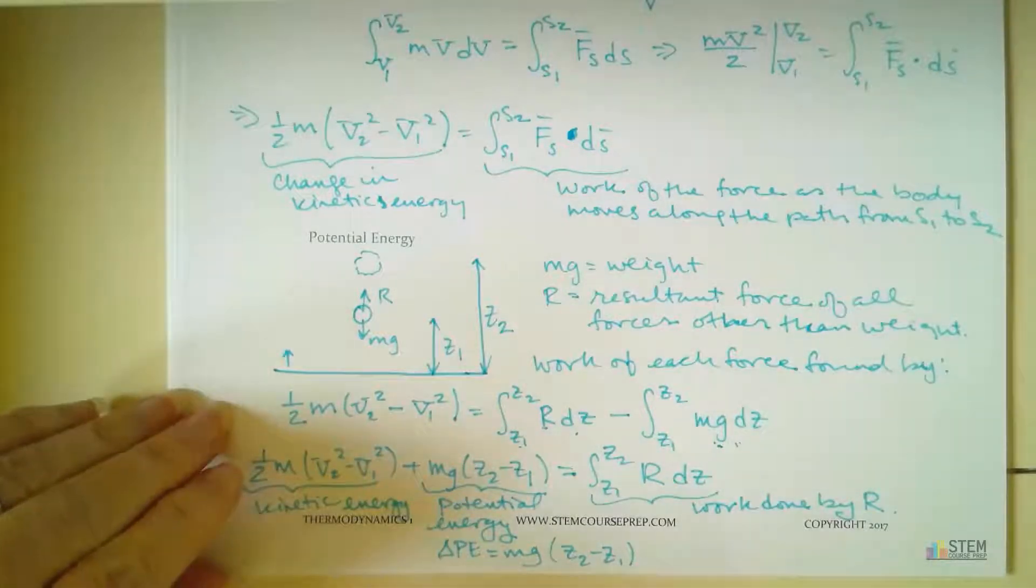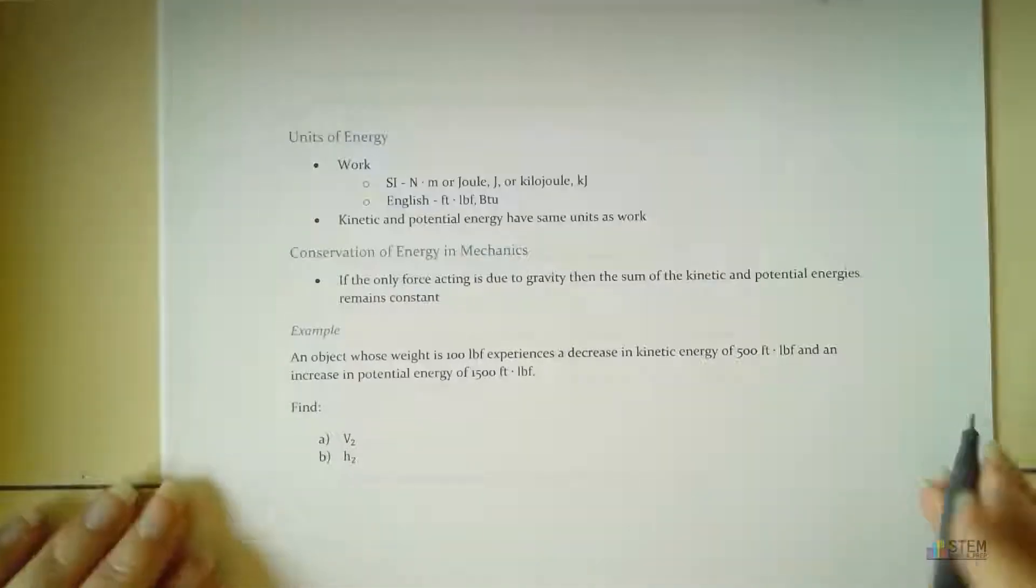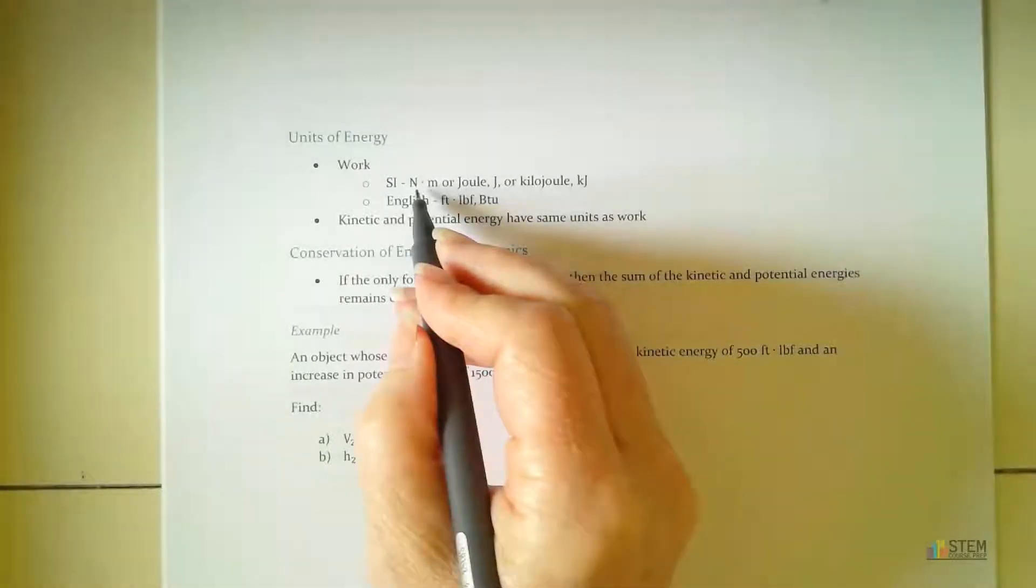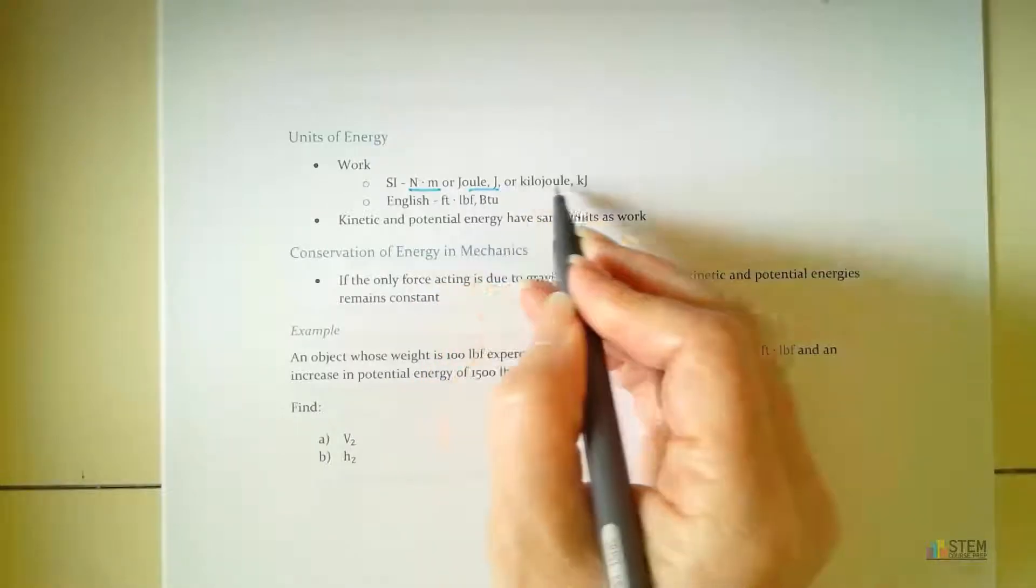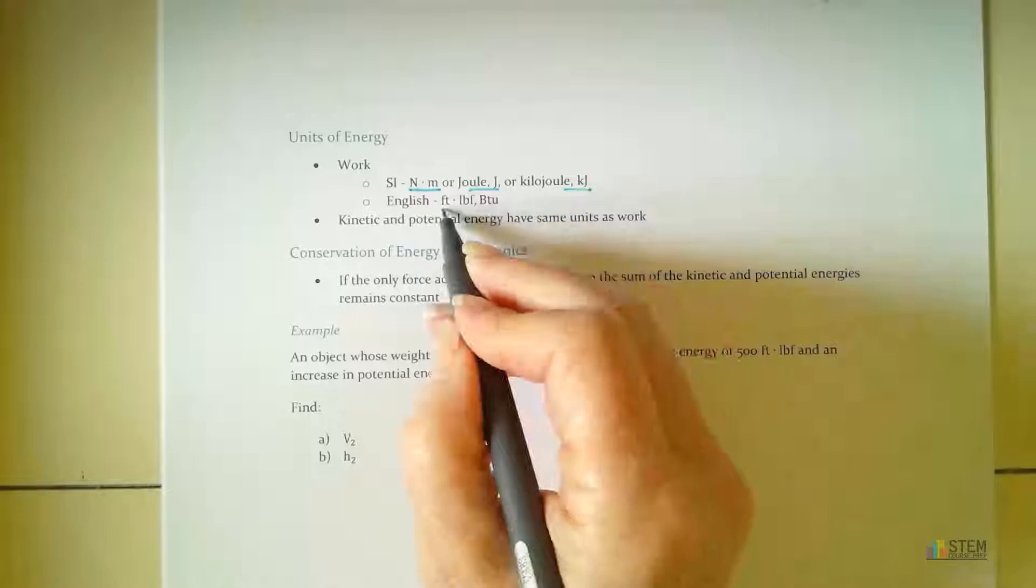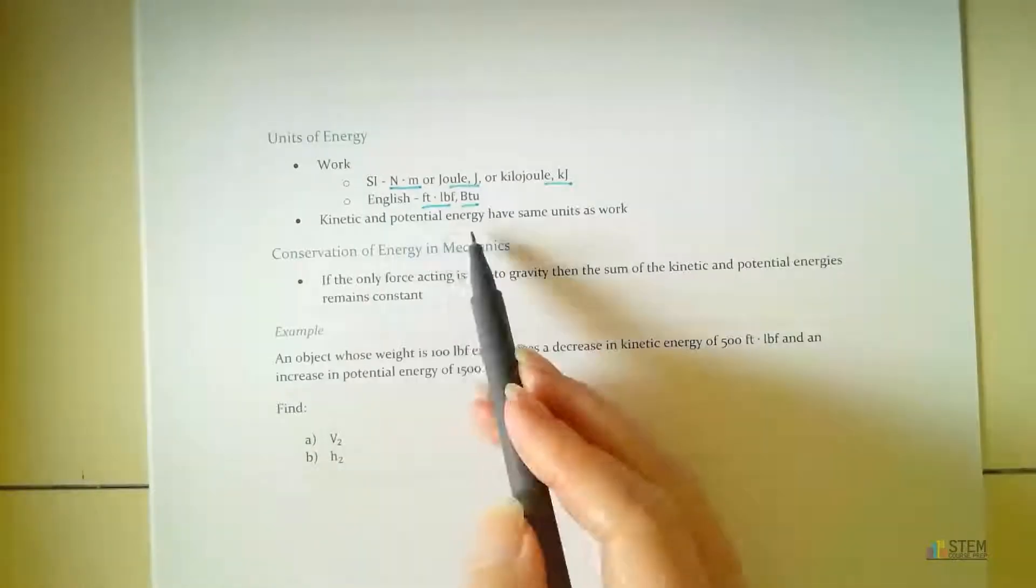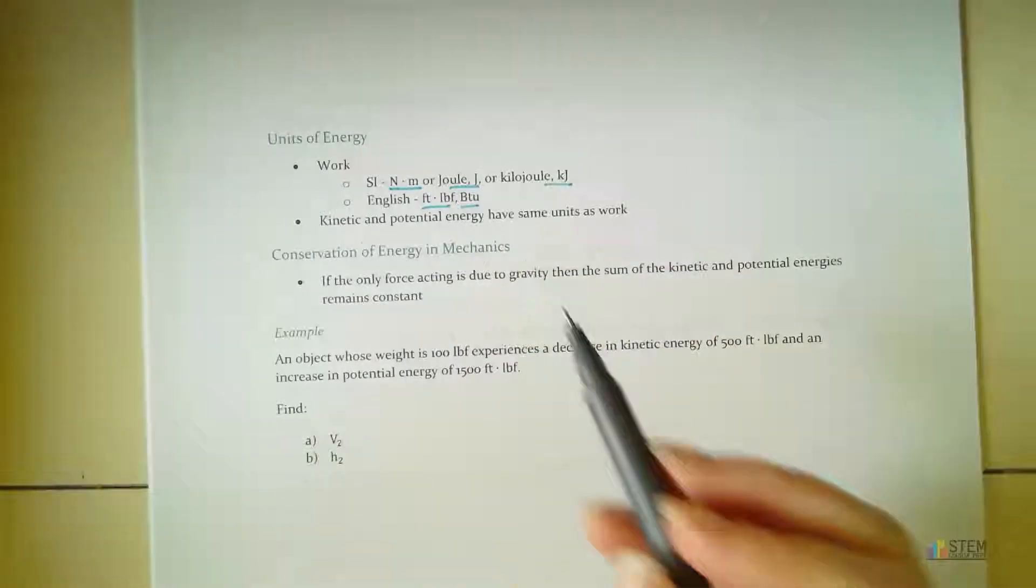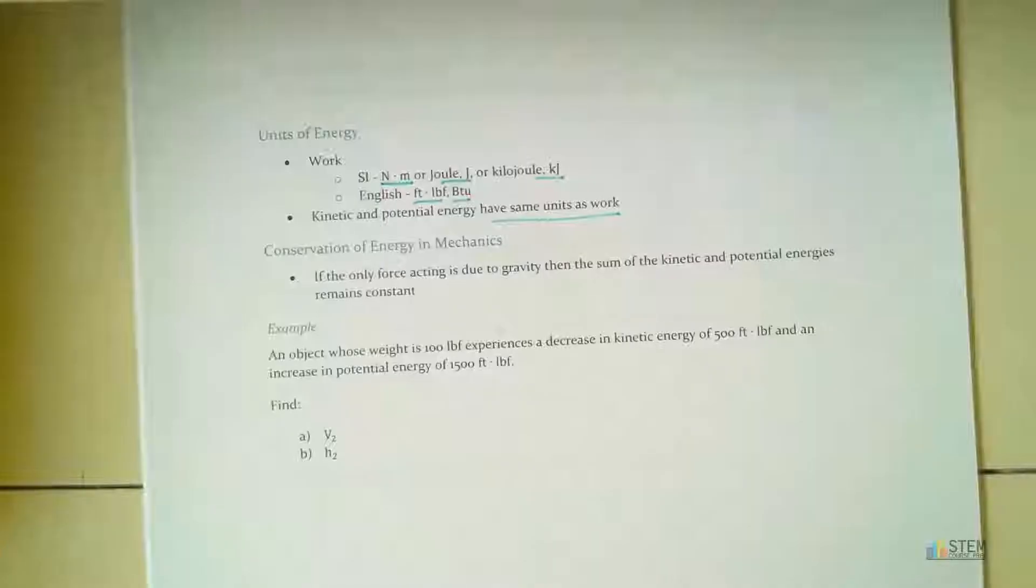Now our units of work for the SI system, we're going to have newton meters, which is also joule, or you could say kilojoule. In English, we're going to have foot-pound force, or BTU. Now our kinetic and potential energy, since they were in the same equation as work, those have to have the same units as work.